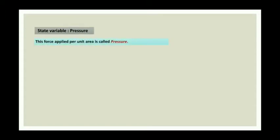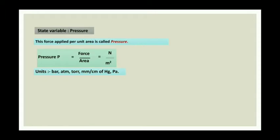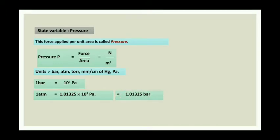Moving to the next variable: pressure. Pressure is force per unit area. Newton per meter square is the unit. You have plenty of units: bar, atm, torr, mm or cm of Hg, Pascal, etc. The conversions you should know: 1 bar is equal to 10⁵ Pascal. 1 atm is equal to 1.01325 × 10⁵ Pascal, which is 1.01325 bar. Also, 1 atm is equal to 760 mm of Hg. You should memorize these conversion factors.